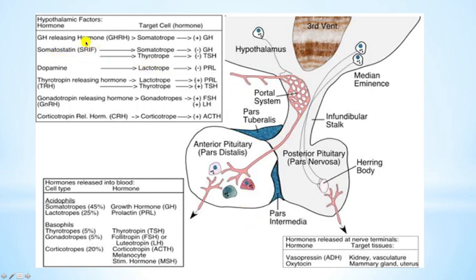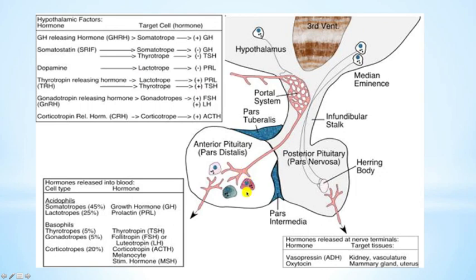The second hypothalamic factor is somatostatin, produced by the paraventricular nuclei. It acts to inhibit growth hormone release and also inhibits thyrotropin releasing hormone (TRH). Dopamine is released from the arcuate nucleus and is also known as prolactin inhibiting factor or prolactin inhibiting hormone. It goes to the lactotrophs — a sub-population of the acidophils — and inhibits the release of prolactin.